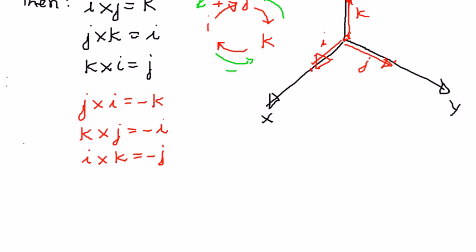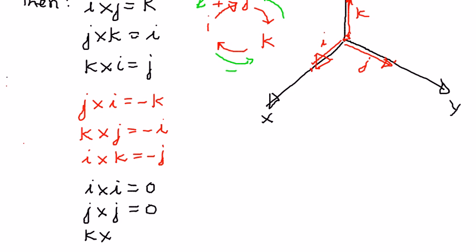The other properties to keep in mind are: i cross i equals 0, j cross j equals 0, and k cross k equals 0. We will use these properties to solve some simple example problems in the next presentation.